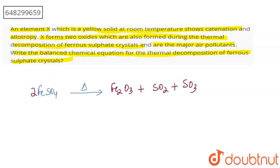This type of reaction takes place. And you can see it in a balanced way, because both atoms are on reactant and product side. We have to write the balanced chemical equation. That element X is yellow solid at room temperature, shows catenation property and allotropy.